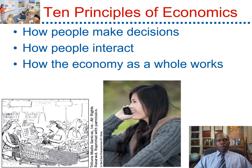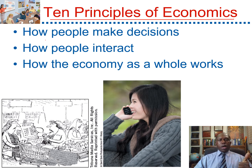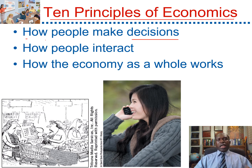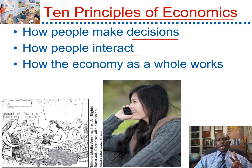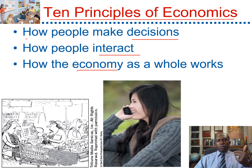The ten principles of economics can be divided into three categories. Category one is about how people make decisions — decisions about the allocation of scarce resources. The second category is about how people interact, which takes place in the market. The third category is about how the economy as a whole works, dealing with economic growth, unemployment, and inflation. Thank you.